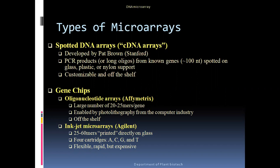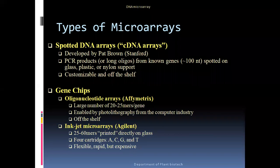Within hybridization-based microarrays, we have spotted DNA arrays and gene chips, which include oligonucleotide arrays and inkjet microarrays. Spotted DNA arrays are traditional — when microarray techniques started, scientists developed these cDNA arrays containing PCR products from known genes, spotted onto glass, plastic, or nylon supports. This is the important difference between spotted DNA arrays and the traditional approach.